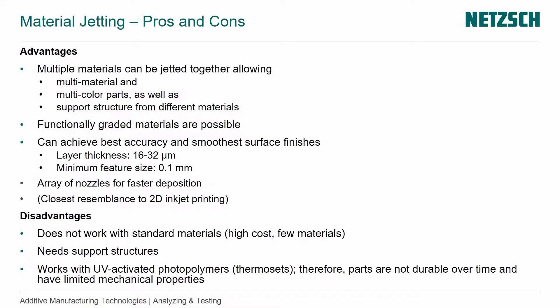The advantages of the process are that multiple materials can be jetted together, so we can get multi-material properties, multi-color parts, as well as support structures from different materials. We can get functionally graded materials, which is not possible with any other process. We can achieve the best accuracy and the smoothest surface finish, with a layer thickness of 16 to 32 micrometers and a minimum feature size of 0.1 millimeter.